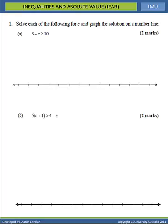What we want to do is isolate C. We need to move the 3, so we'll have minus C is greater than or equal to 10, and the 3 will go across as a minus 3, giving us minus C is greater than or equal to 7.